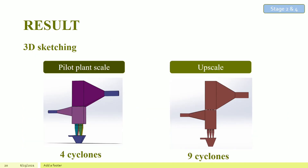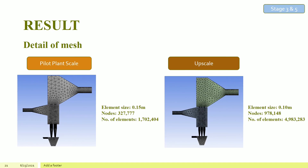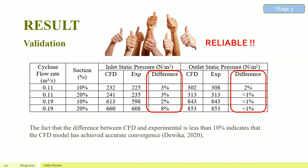The three-dimensional sketching of RMC and upscale RMC are drawn using SolidWorks 2019. The dimensions of upscale RMC are 1.5 times the dimensions of the pilot plant RMC. The dimensions of the cyclone in upscale RMC remain the same as in the pilot plant RMC, but the number of cyclones increases from 4 to 9. The number of elements in RMC after meshing with element size 0.15m is 1.7 million, and in upscale RMC with element size 0.1m is 5 million.